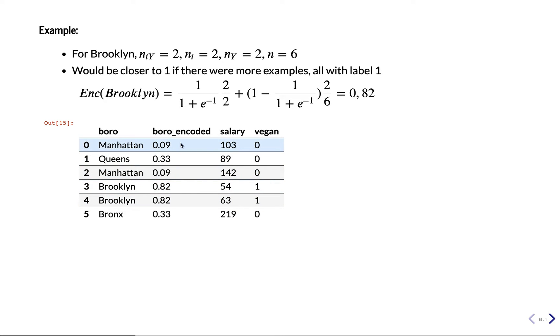Manhattan on the other hand is associated with zero most of the times, so it gets a value close to zero. If you would, for instance, flip this label and make it one, then Manhattan will be 50-50 associated with both, and then this value, the encoding will be 0.5.